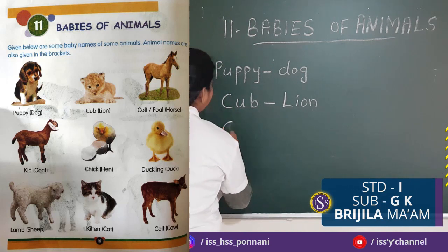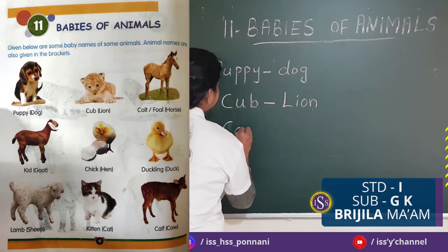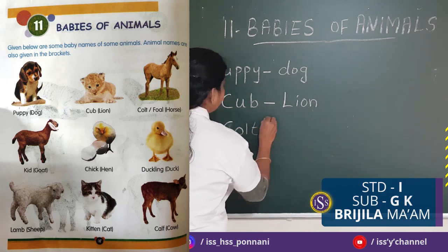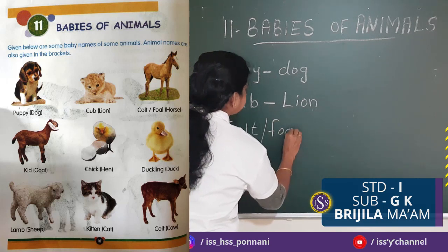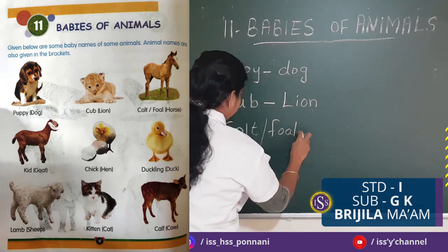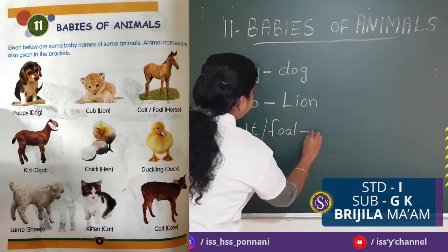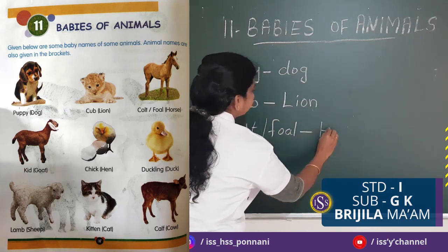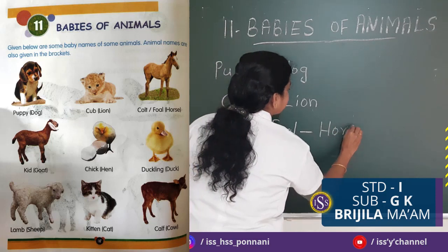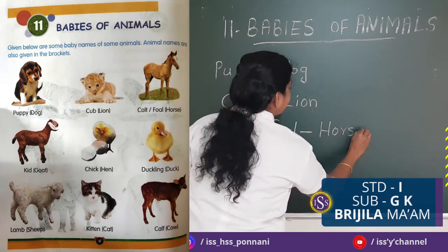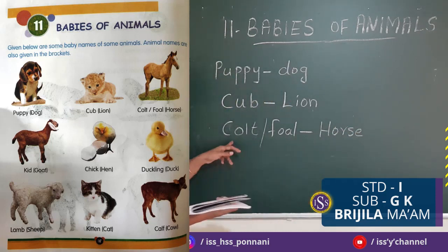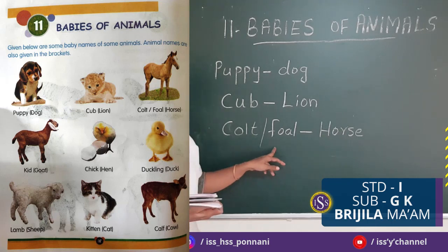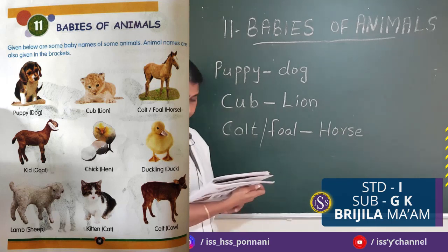Now, what's the name of this baby? Colt or Foal. What's the name of the animal? Horse. The horse's baby is called Colt or Foal.